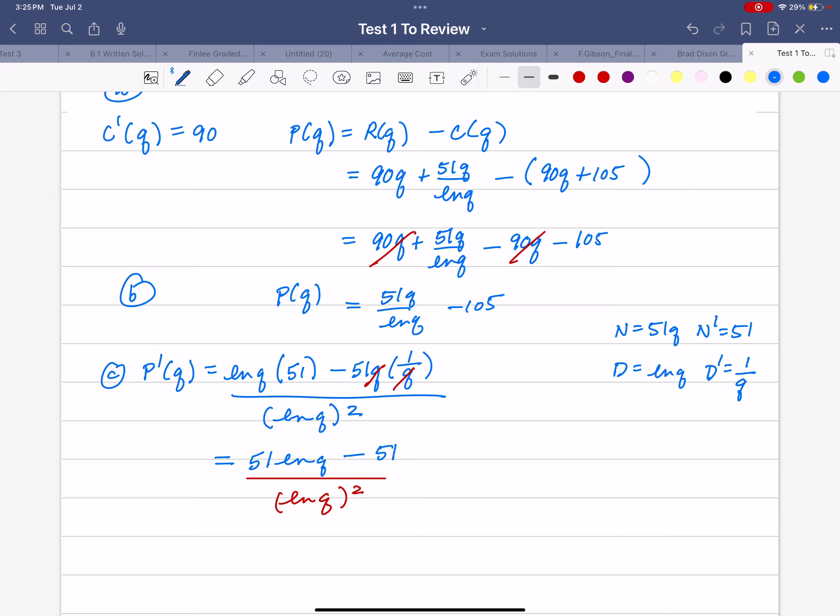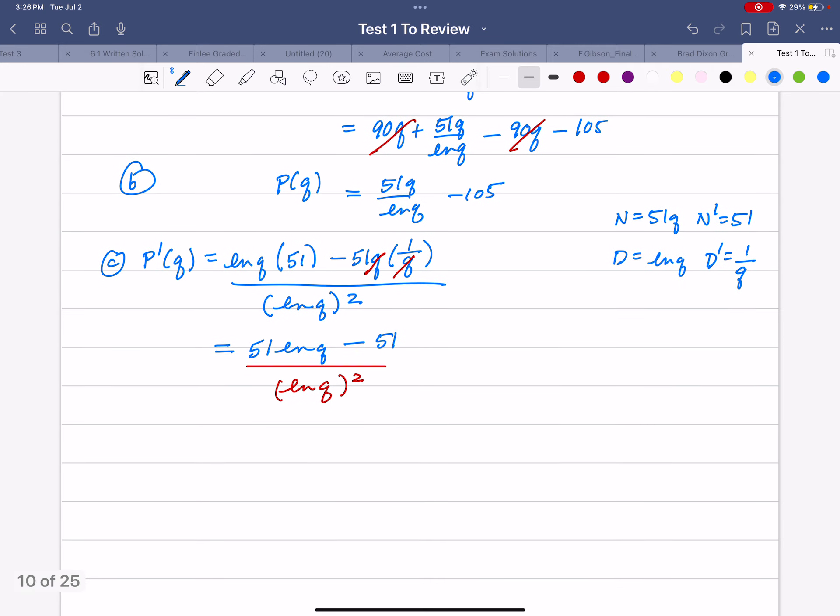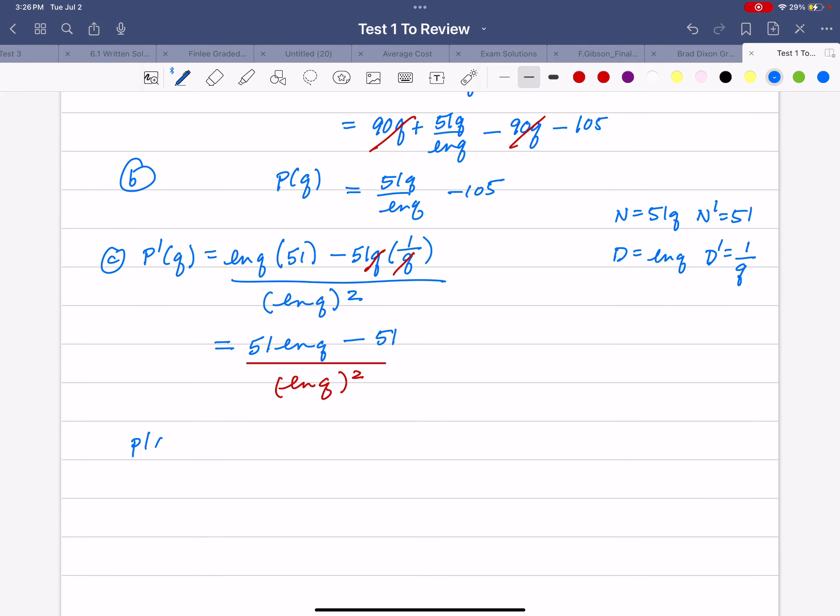Now what I need to do is find it at 8, because it says one more unit, that means derivative, when 8 units are sold. So P'(8). You want to make sure you do this carefully on your calculator. 51 times the natural log of 8 minus 51,